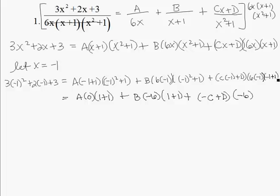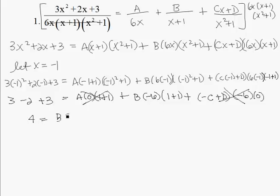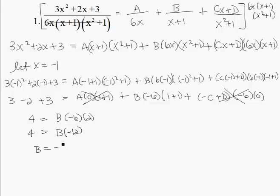Since the A term and the Cx plus D term both go to zero, we're left with: 3 minus 2 plus 3 equals B times negative 6 times 2. That gives 4 equals B times negative 12, so B equals negative 1 third.